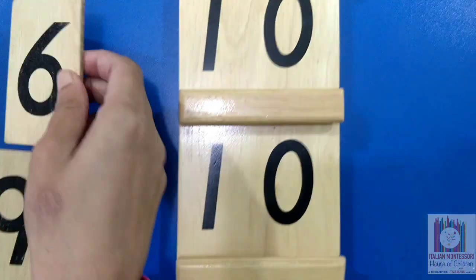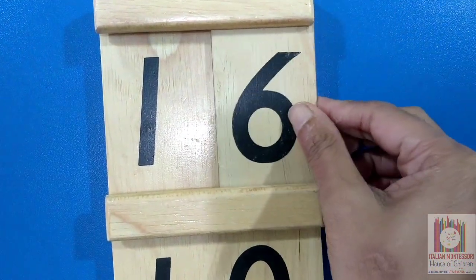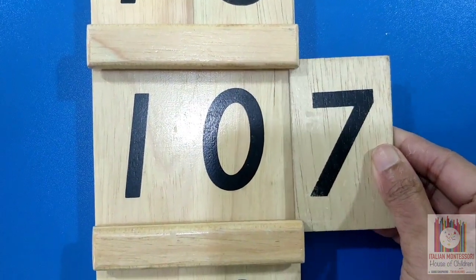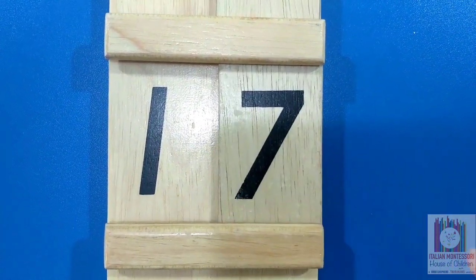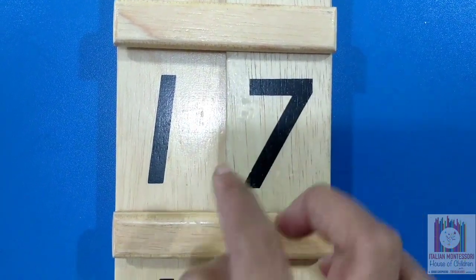When we put together 10 and 6 units, we get 16. This is 17. When we put together 10 and 7 units, we get 17.